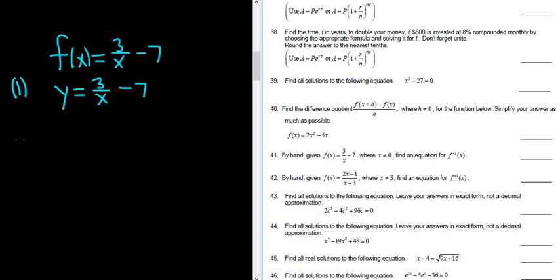Step two is you switch your x and your y. So we have x equals 3 over y minus 7.